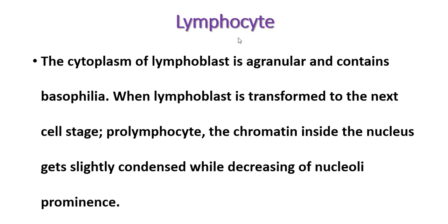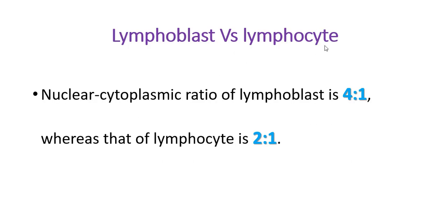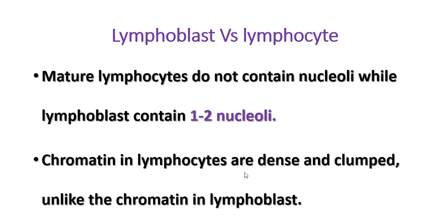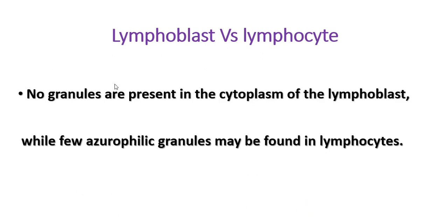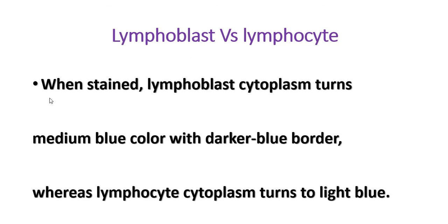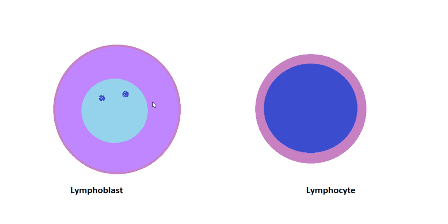Comparing lymphoblast versus lymphocyte: the nuclear-to-cytoplasm ratio of the lymphoblast is 4:1, whereas in lymphocytes it is 2:1. Mature lymphocytes do not contain nucleoli, but lymphoblasts contain one or two. The chromatin of lymphocytes is dense and more deeply stained, while lymphoblasts contain less stained nuclei with loosely packed chromatin. No granules are present in the cytoplasm of lymphoblasts, but a few granules may be found in stained lymphocytes. Lymphoblast cytoplasm stains medium blue with a dark blue border, whereas lymphocyte cytoplasm turns light blue.